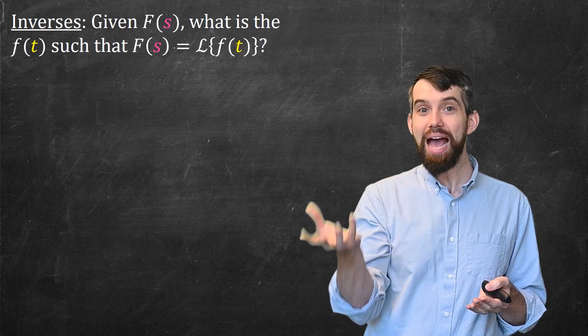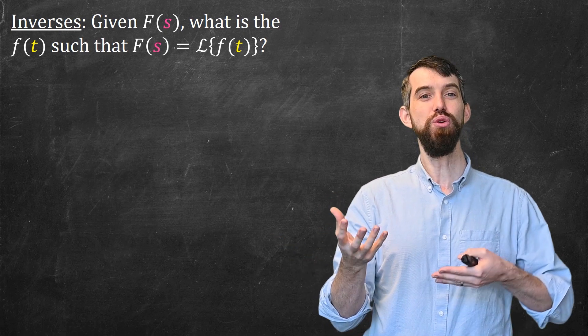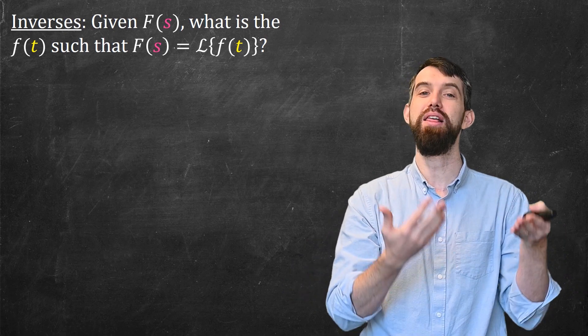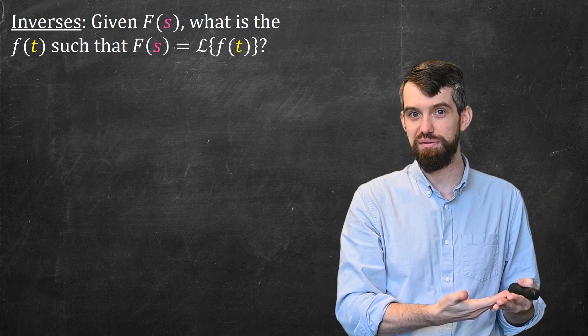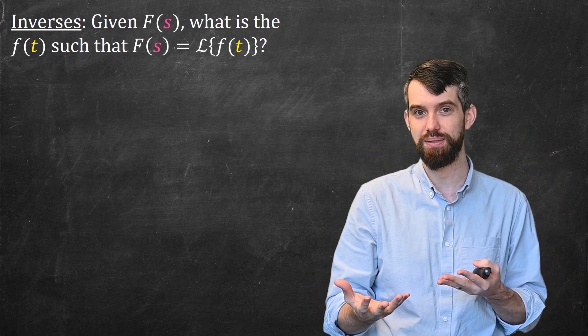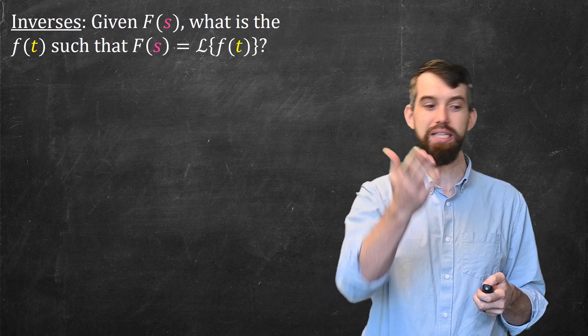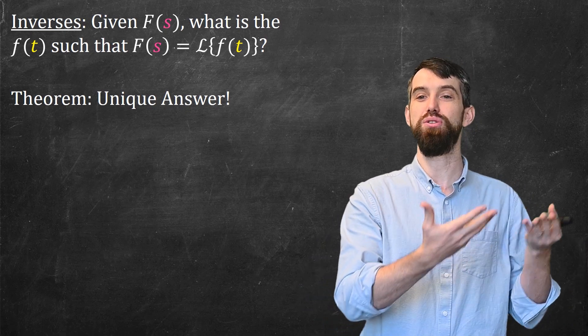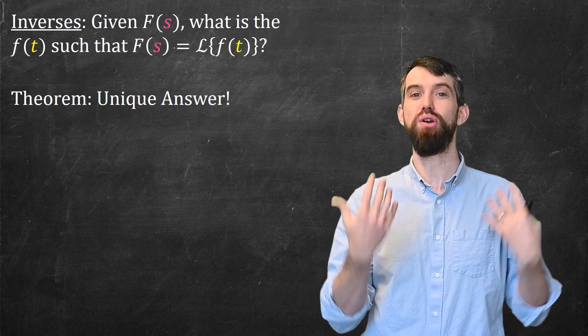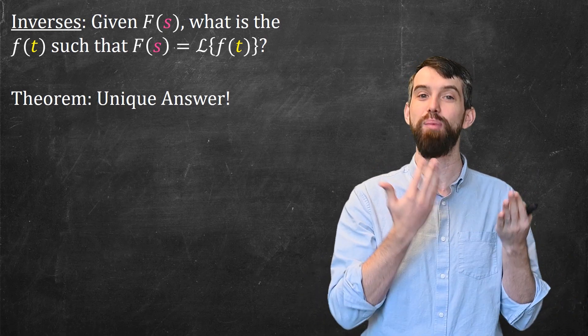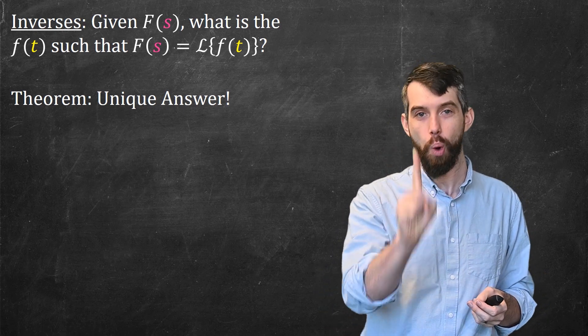If you have F(s), if you have the right-hand side of your Laplace transform, how could you have undone that process to get the little f(t) such that the Laplace transform of the little f(t) is going to give you this thing you're given, this big F(s)? Now, we have a theorem, and I'm not going to prove it here, but we have a theorem that basically says that there is a unique answer to this process. That is, if you have a big F(s), and if there turns out to be a little f(t) that the Laplace transform of little f(t) is the big F(s), then there is only one of those.